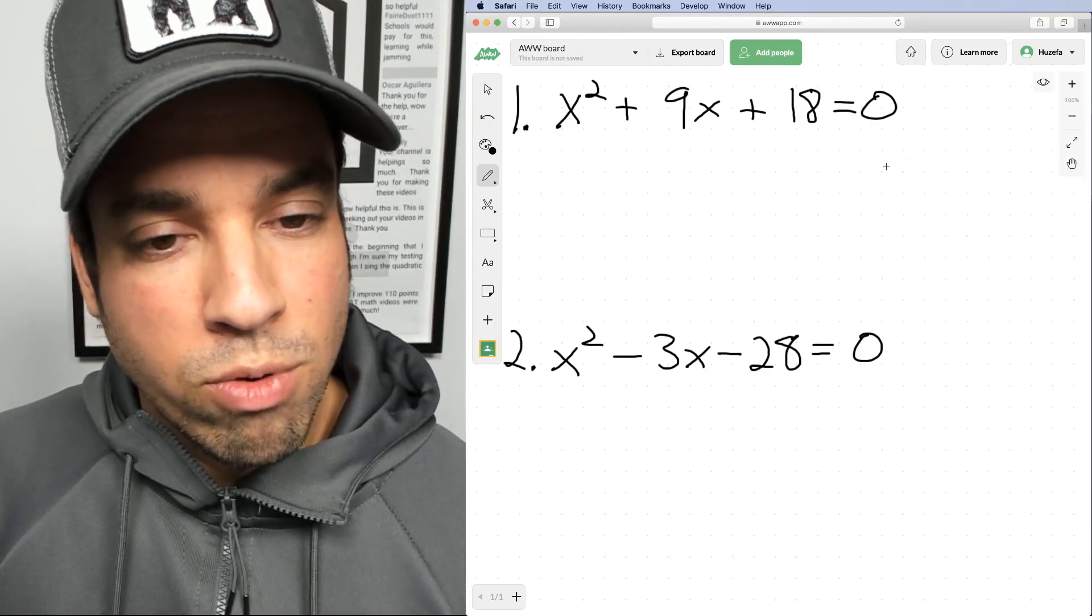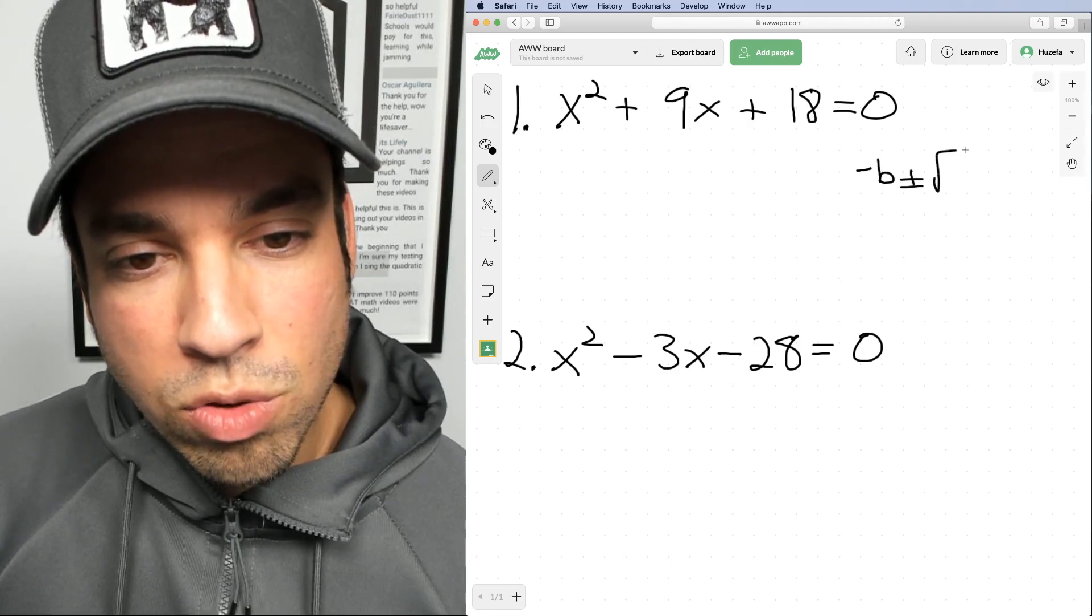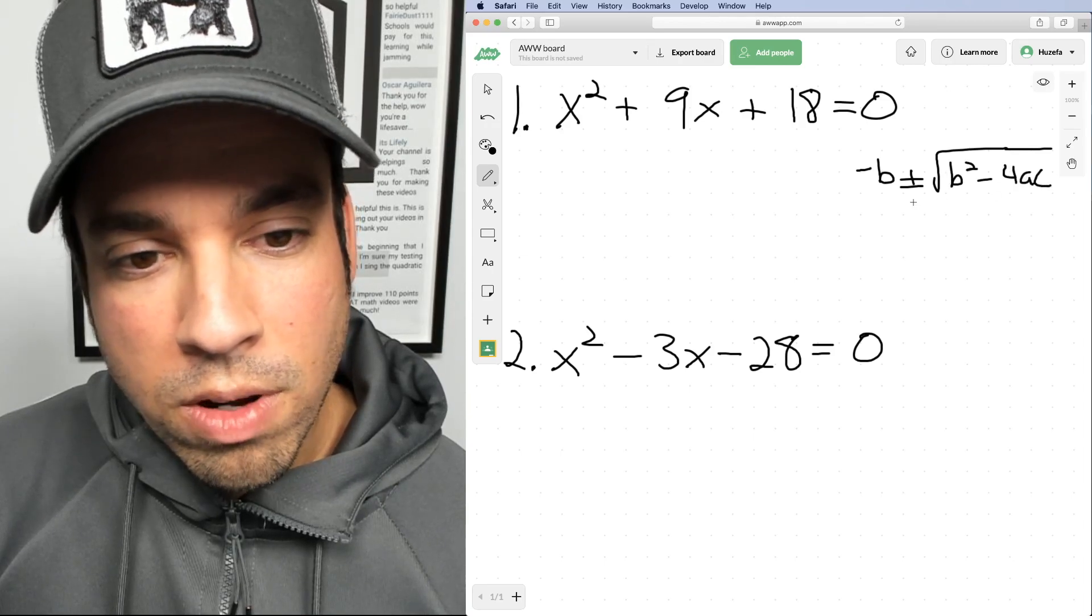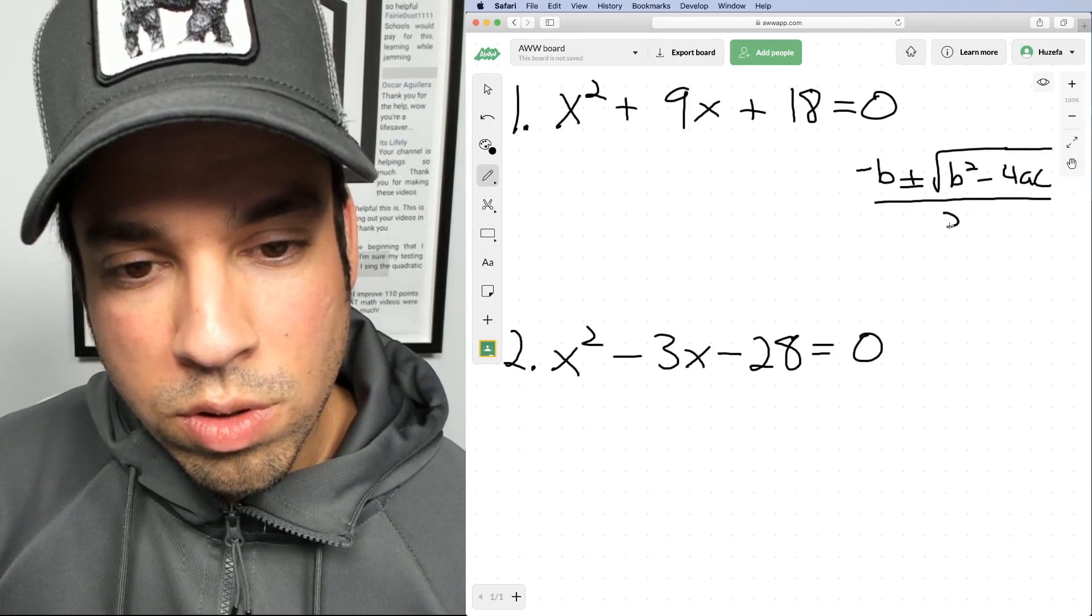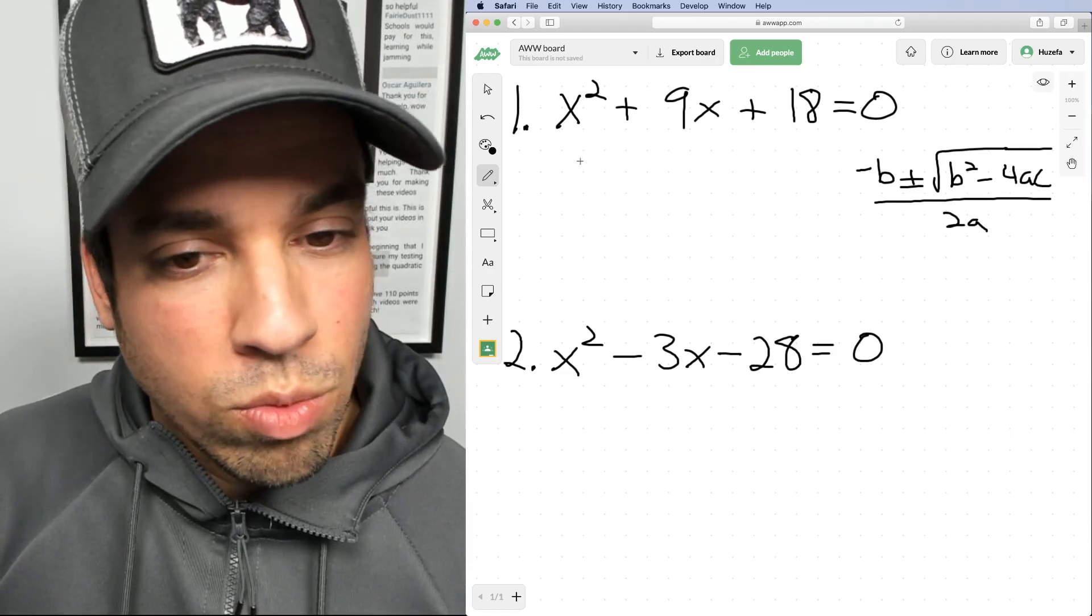Now, what is the quadratic formula? It is negative B plus or minus the square root of B squared minus 4AC over 2A. And this is just something that you're gonna want to eventually commit to memory.